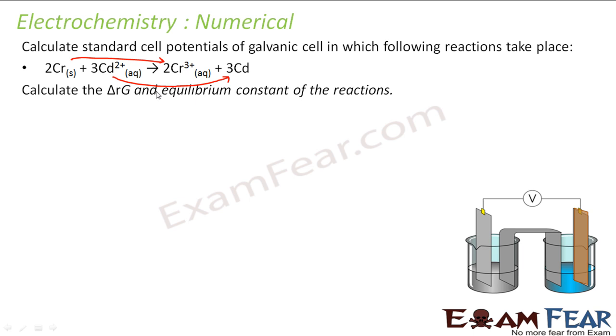First we have to find the standard cell potential, that is E°, and then we have to calculate ΔG and we have to find equilibrium constant. These three things we have to find.